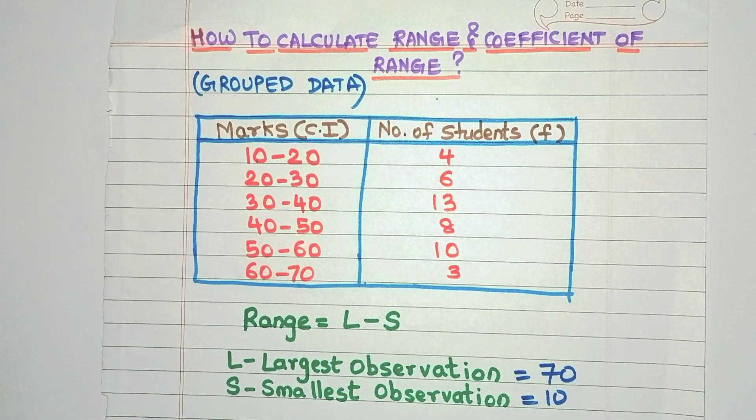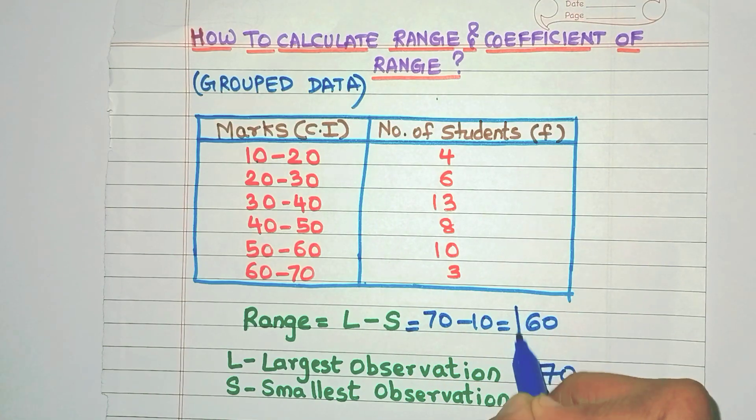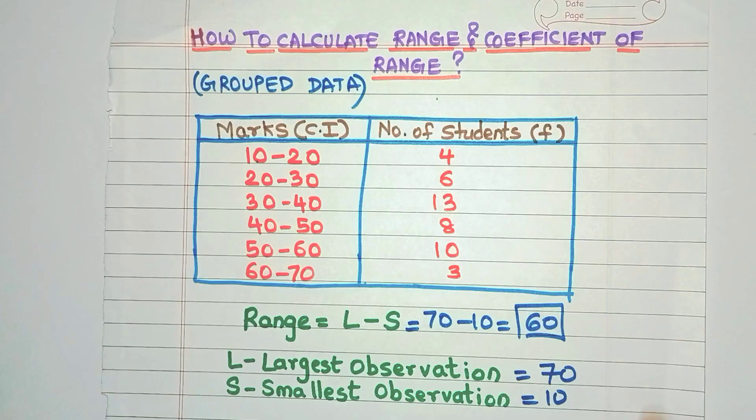So what is range? Now it's very easy to calculate. It is L minus S, that is 70 minus 10 which is 60. So range for this data is 60.